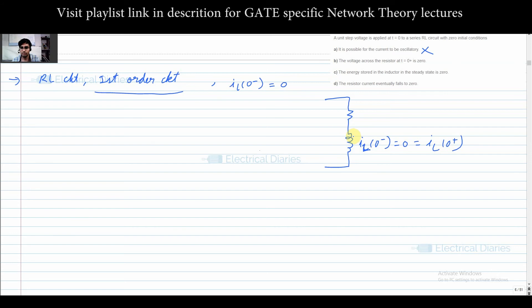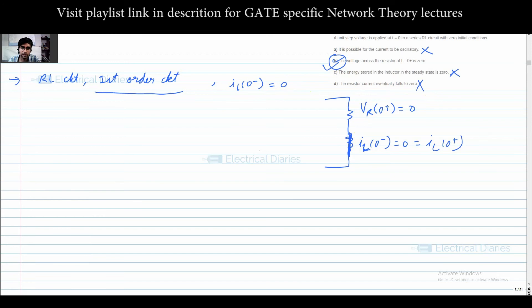Since iL(0⁻) = iL(0⁺) = 0, the current at t = 0⁺ is zero, so the voltage drop across the resistor at t = 0⁺ is also zero — meaning VR at 0⁺ equals zero, making option B correct. Energy stored in the inductor at steady state is not zero. The current doesn't fall to zero either, since the inductor behaves like a short circuit at steady state. So option B is the correct answer.